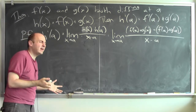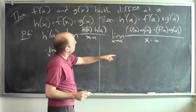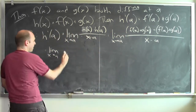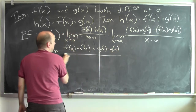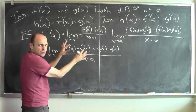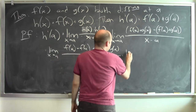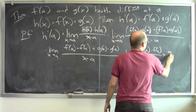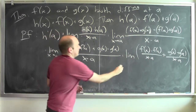Now I want to calculate that limit. I can rearrange the numerator. The numerator is f of x plus g of x minus f of a minus g of a. So I can rearrange it and get f of x minus f of a plus g of x minus g of a, all divided by x minus a. I can actually split this up into two separate fractions: f of x minus f of a over x minus a, plus g of x minus g of a over x minus a. So this is the limit as x goes to a of that entire expression.